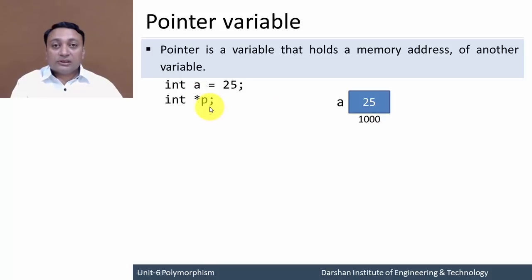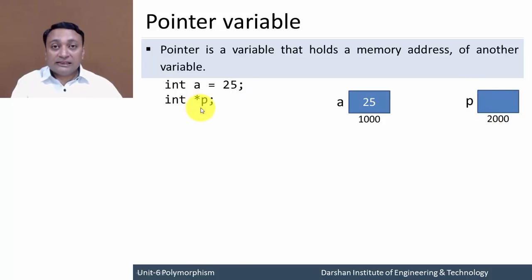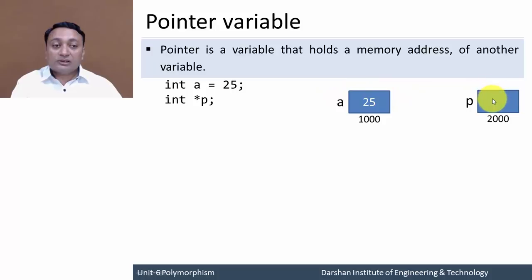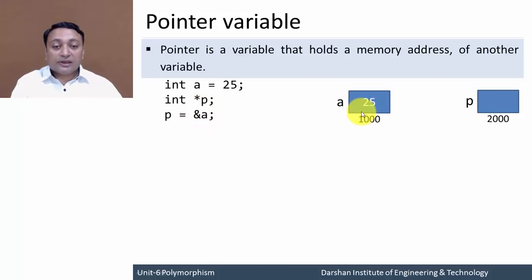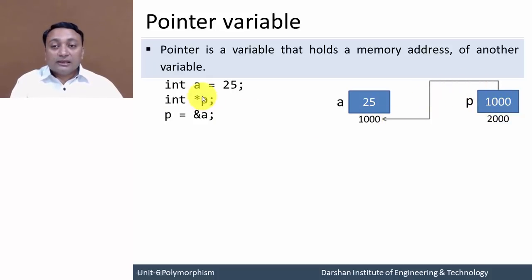Now I am creating one pointer variable. Internally it will occupy a memory block with address 2000 and label this block as 'P'. This is the way you declare a pointer variable. The task of a pointer variable is to hold the memory address of another variable. To store the address of variable 'a' into pointer variable P, we write P = &a. Here address of 'a' is 1000, so 1000 will be stored in P. Ultimately P is pointing to variable 'a'.